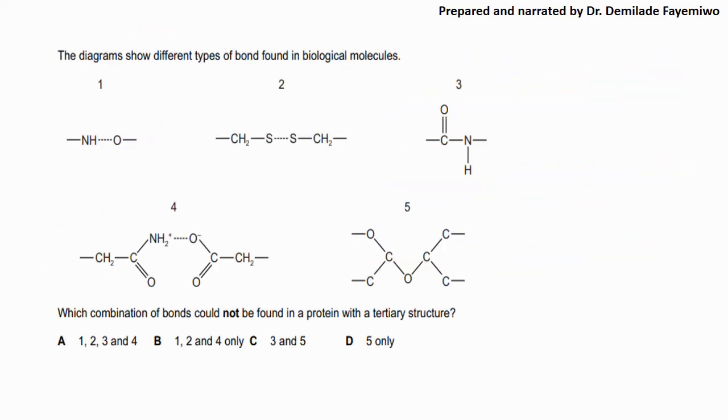This is an interesting question on chapter 2. The diagrams show different types of bonds that are found in biological molecules. So when you look at number 1 it shows you an NH bond to an oxygen. Number 2 shows you a sulfur to sulfur bond. And number 3 shows you a carboxyl bond and an amine bond. Number 4 shows you quite an interesting bond, an NH2 with the oxygen. And number 5 shows you a carbon to oxygen to carbon as well. And it says which combination of bonds could not be found in a protein with a tertiary structure.